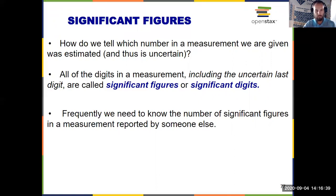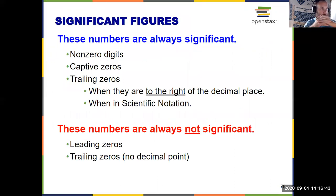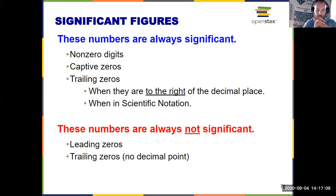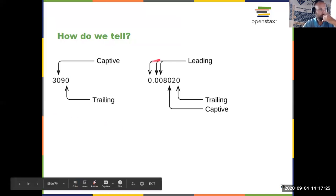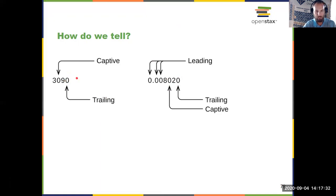Everything that's non-zero is always significant. The tricky part comes with zeros. The rules: it's always significant if it's non-zero (one through nine); a captive zero between two non-zero numbers; a trailing zero to the right of a decimal point; or any zero in scientific notation reported correctly. Things that are not significant: leading zeros before the first non-zero digit, and trailing zeros where there's no decimal point.